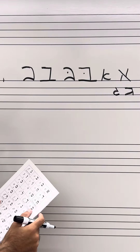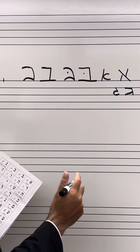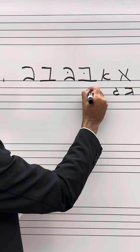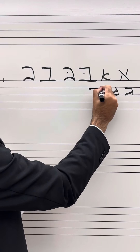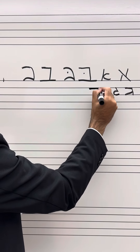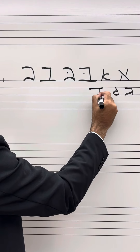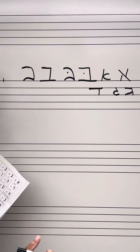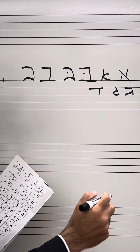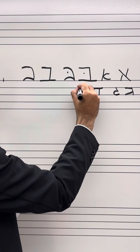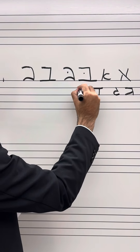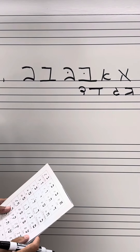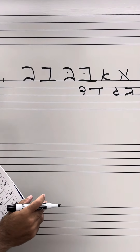Next we have the Dalet. The Dalet appears as a top front coming down with a little piece over there — that's how the Dalet looks in block. But in cursive Hebrew script it's going to appear coming down like that. That is how you write a Dalet in Hebrew.